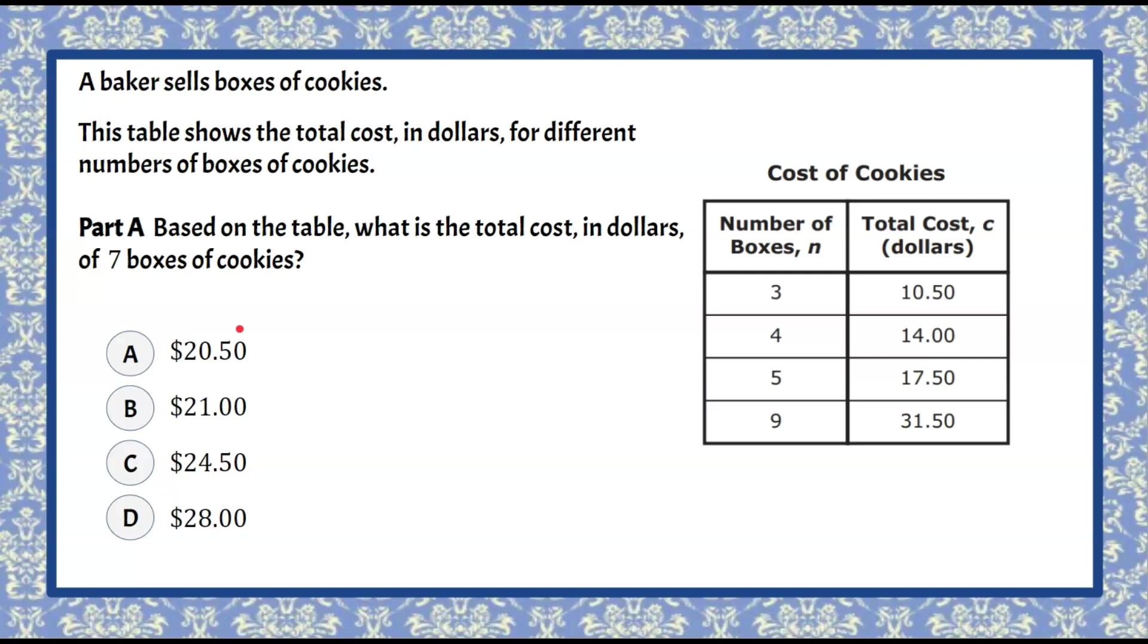Welcome back. So we're looking to find the cost of seven boxes of cookies based on this information provided in this table. So we can see that we have number of boxes right here and when we buy three boxes it costs $10.50, four boxes $14, five boxes $17.50. So we can see that it's increasing by one and that seven boxes of cookies would fall into place right here.